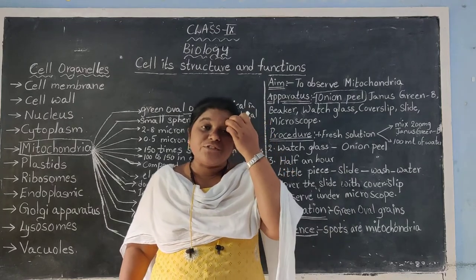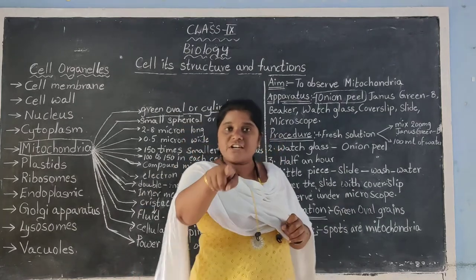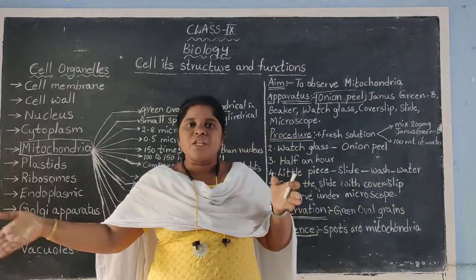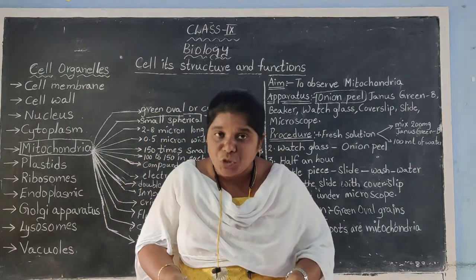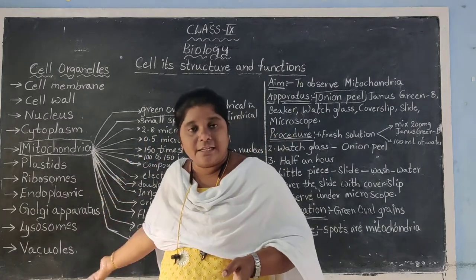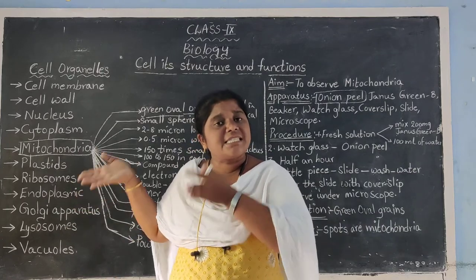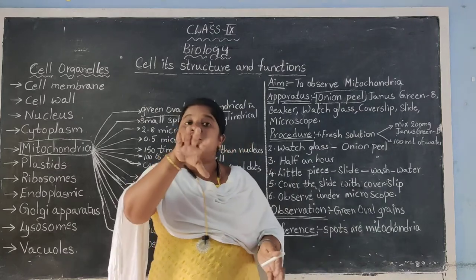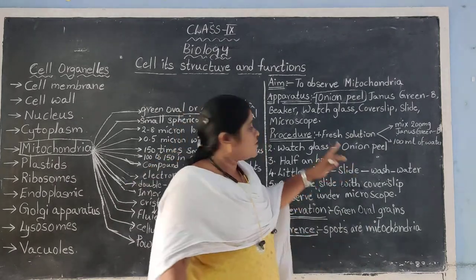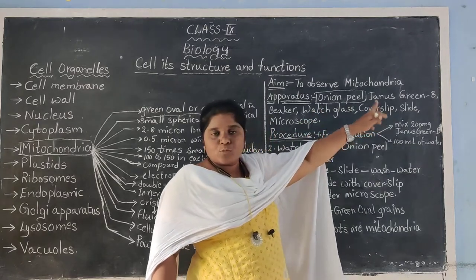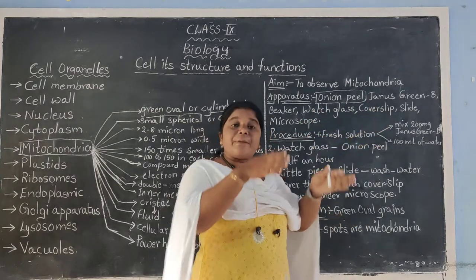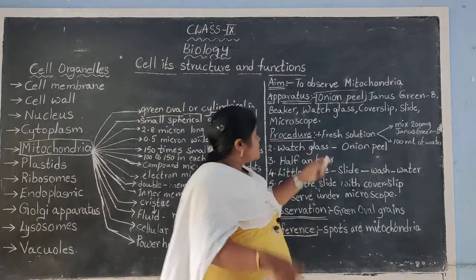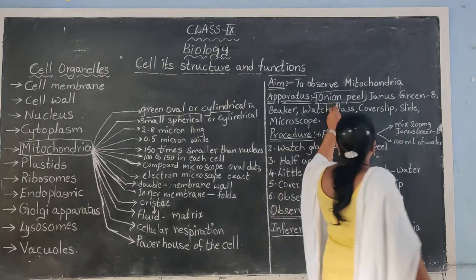Robert Hooke discovered the cell using an oak tree as experimental material, and he concluded that each and every organism is made up of cells. Robert Brown discovered the nucleus using orchid as experimental material. Now, for us to observe mitochondria, we are taking an experimental material called onion peel. There is a peculiar way to observe mitochondria.